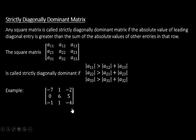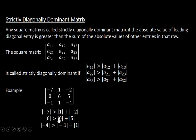For example, this matrix is strictly diagonally dominant because the absolute value of minus 7 is greater than the sum of the absolute values of 1 and minus 2. The absolute value of 6 is greater than the sum of the absolute values of 0 and 5. The absolute value of minus 4 is greater than the sum of the absolute values of minus 1 and 1. Hence this matrix satisfies the condition of strictly diagonally dominant matrix.